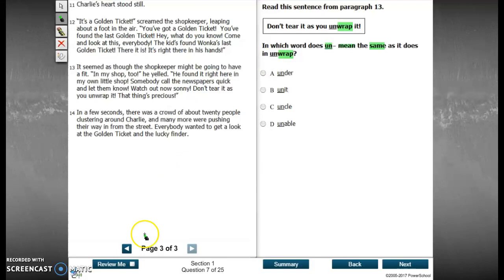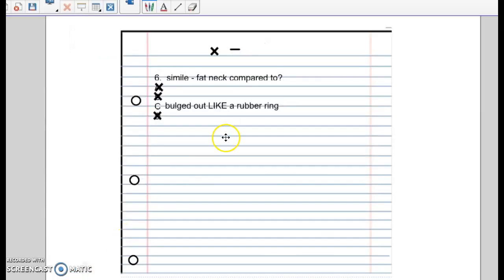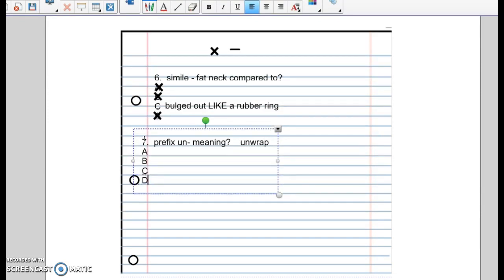So this is very simple. On your loose leaf, number seven, prefix un-meaning. And the sentence had the word unwrap. We have four choices. Let's see, under. Unit.